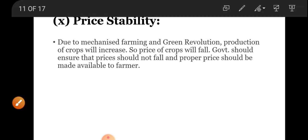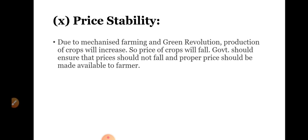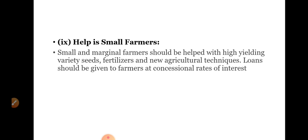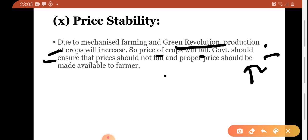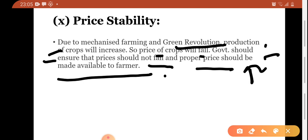Next is price stability. Due to mechanized farming and the green revolution, production of crops will increase. There is a need for a new green revolution — in 1964 the maximum amount of production per hectare was yielded in India. If production increases by a high amount, the price of crops will fall. So government should ensure that prices do not fall and proper prices are made available to farmers. Price stability is very necessary.